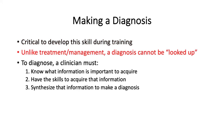Once a diagnosis is made, treatment and management can always be looked up. For example, if you make the diagnosis of acute pericarditis, you can look up the latest treatment recommendation — whether it's an NSAID or colchicine, you can look up the dosing. The process of making a diagnosis, however, is not so simple.